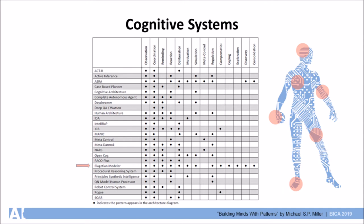We surveyed a number of existing cognitive systems looking for these requirements and analyzed how they were constructed. We found a number of recurring design patterns, and we put these patterns into the Piagetian modeler.